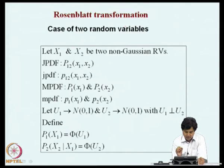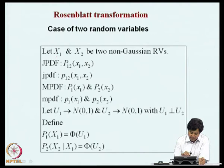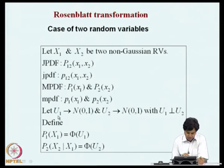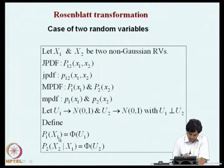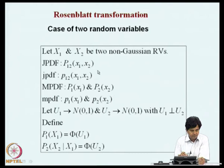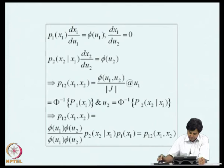For two-dimensional random variables, let X_1 and X_2 be non-Gaussian with joint probability distribution function P_{12}(x_1, x_2). The marginal distribution functions and density functions are defined accordingly. We introduce two standard normal independent random variables U_1 and U_2. According to the Rosenblatt transformation, the prescription is: P_1(x_1) = Phi(U_1) and P_2(x_2 | x_1) = Phi(U_2). Using this, for given values of U_1 and U_2, computing X_1 and X_2 yields a joint density function conforming to the specified target distribution. The proof of this is left as an exercise.